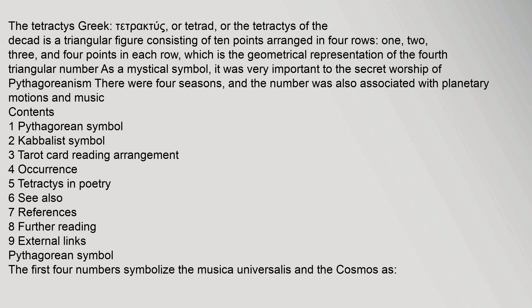The Tetractys — Greek: Tetractys or Tetrad — or the Tetractys of the Decad, is a triangular figure consisting of 10 points arranged in 4 rows: 1, 2, 3, and 4 points in each row, which is the geometrical representation of the fourth triangular number as a mystical symbol. It was very important to the secret worship of Pythagoreanism. There were four seasons, and the number was also associated with planetary motions and music.